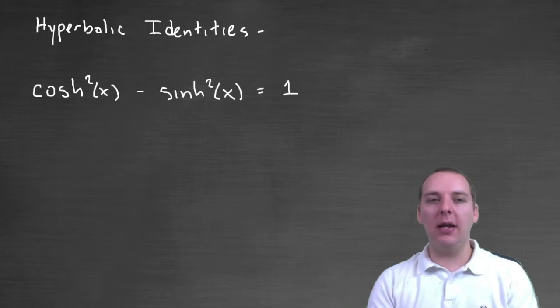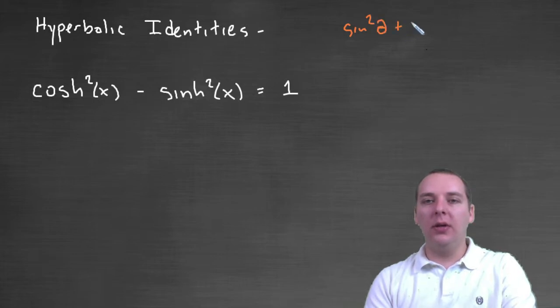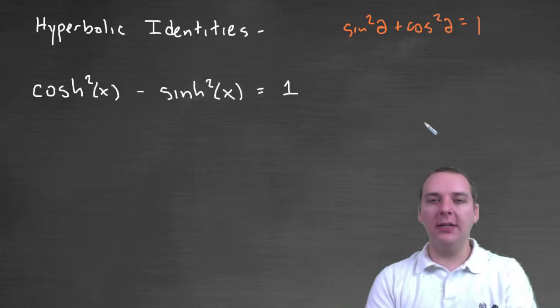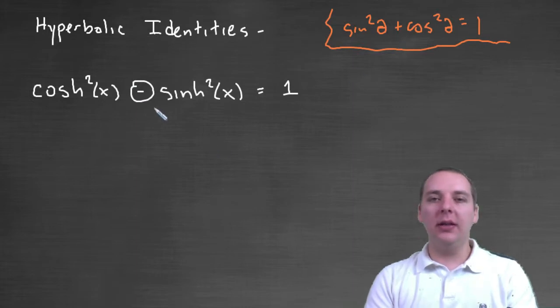So here's one, and right off the bat we see a similarity to our pre-calc classes and trig identities. A trig identity that almost all of us know is sine squared of an angle plus cosine squared of an angle always equals one. Well, for hyperbolic functions, they have the identity hyperbolic cosine squared minus hyperbolic sine squared equals one. So you'll see a similarity, but there are differences. This has to be a minus instead of a plus, but nevertheless it's still very interesting that such a close relationship holds.